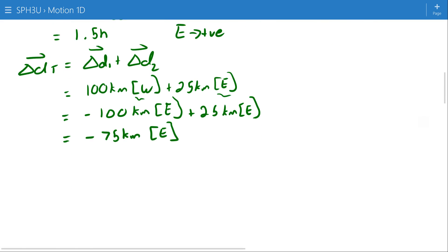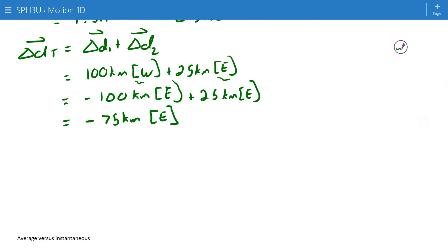Alternatively, if I want my total distance, it's easier than that, because I'm looking at my individual distances and everybody's a scalar, which means there's no directions. Which means I'm going 100 kilometers plus 25 kilometers for a total of 125 kilometers.